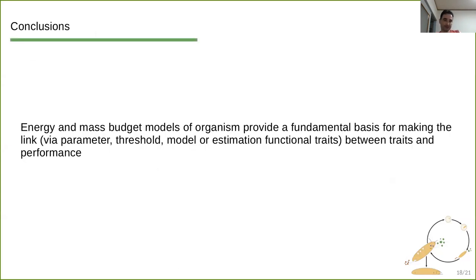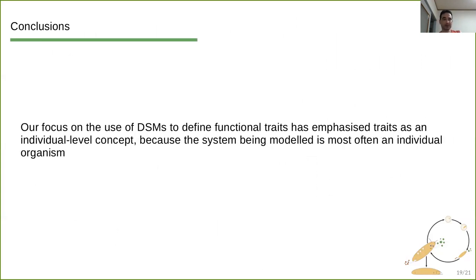So to conclude, energy and mass budget models of organisms provide us with a fundamental basis to make a link between traits and performance. And in that sense we devised four types of traits: parameter, threshold, model and estimation. So our focus on dynamical systems models in order to define functional traits really emphasizes that traits are an individual level concept for most intensive purposes, and this is simply because DSM model individual ontogeny, model an individual organism.